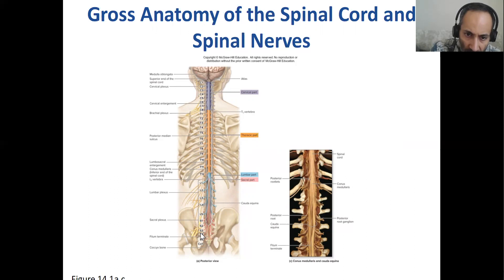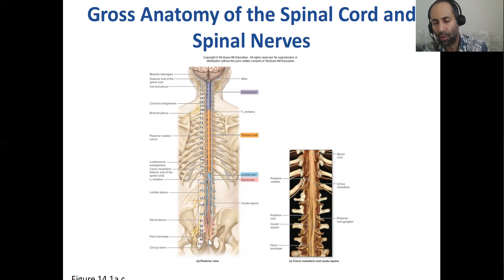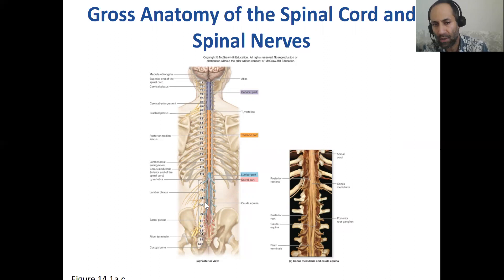Some other structures we can see here include the filum terminale, which is a thin projection of the pia mater — one of your three meninges — that hangs like a tail at the end. And then you have the cauda equina, which literally means horse tail, because there's a bunch of sacral nerves held together like the tail of a horse.